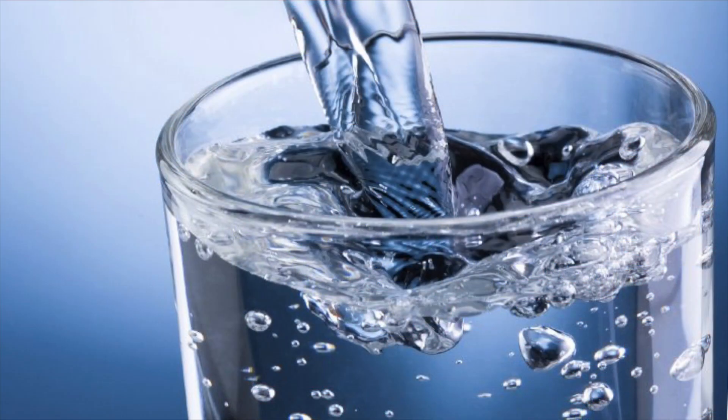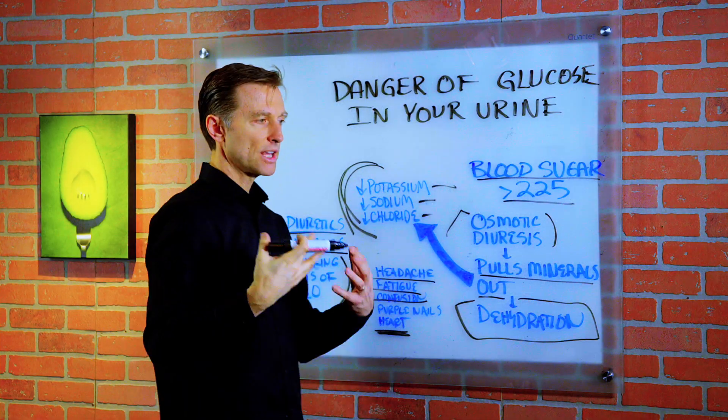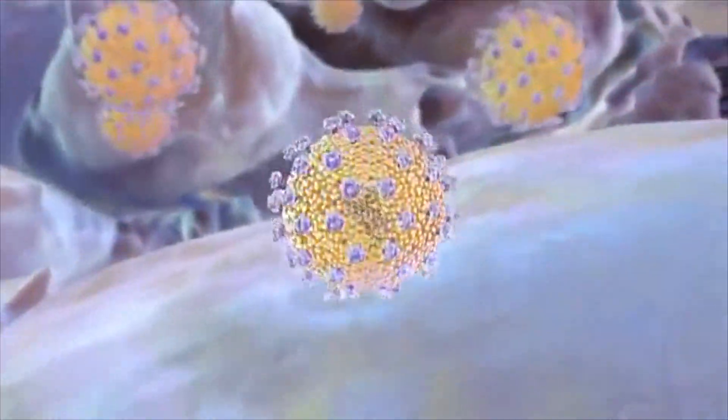And if they're drinking a lot of water without these minerals, they're flushing out more minerals. They're actually diluting the urine.